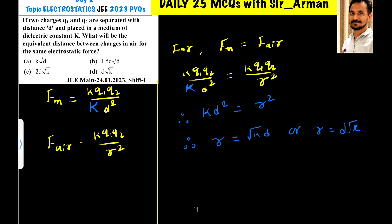Again, it is a very easy question. What is given here? Two charges Q1 and Q2. They are separated by distance d in a medium of dielectric constant k.